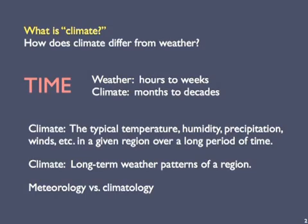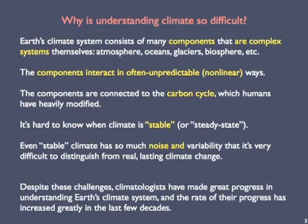Because such different scientific training is needed for each, you should be very careful about climate pronouncements from the local weather forecaster. One of science's biggest challenges is to understand Earth's climate so well that we can explain past climate changes and predict future ones. This is very difficult for a number of reasons. To start, Earth's climate system is extraordinarily complex. It consists of many components or subsystems, each of which is a complex system in itself.